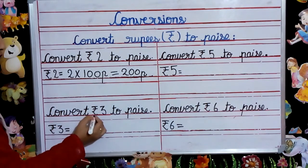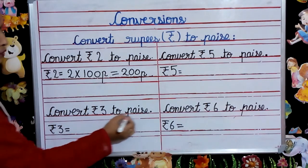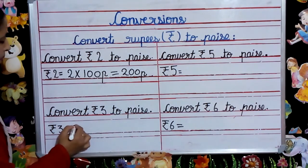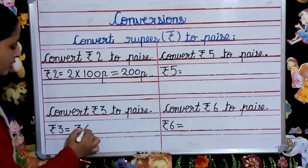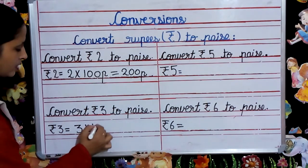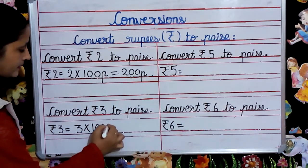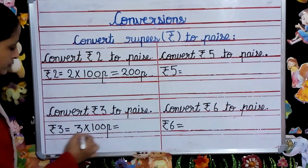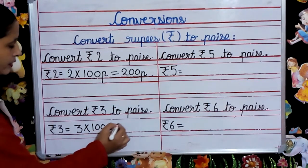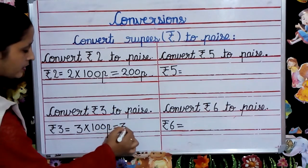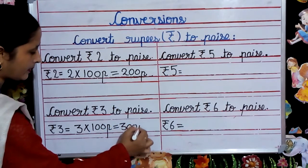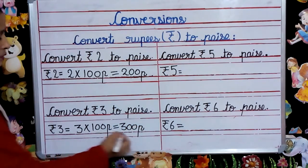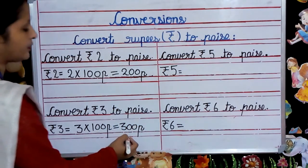Next, convert rupees 3 to paise. For converting rupees 3 to paise, we multiply 3 with 100 paise. 3 multiplied by 100 equals 300 paise. So rupees 3 is equal to 300 paise.